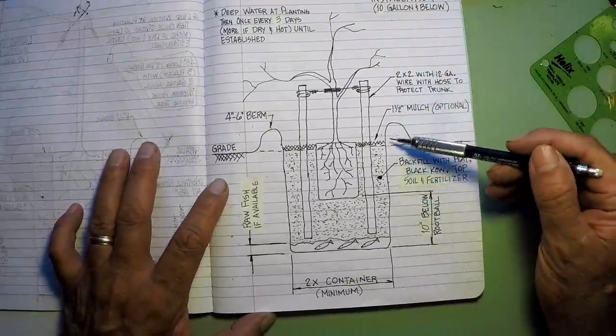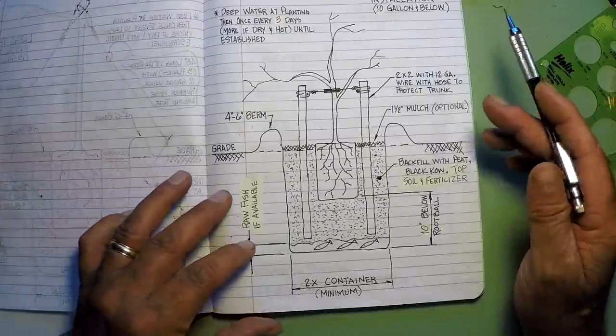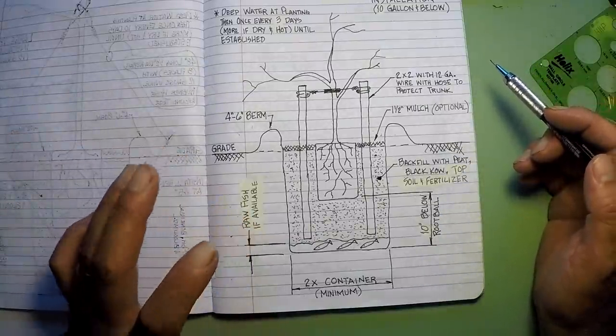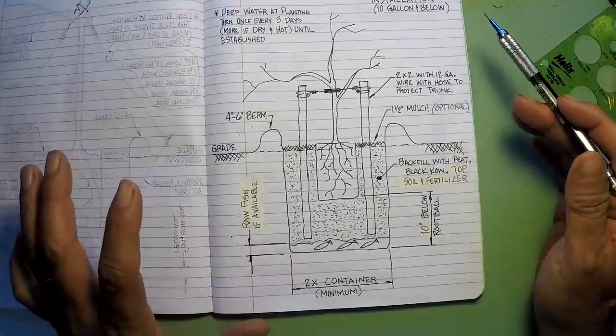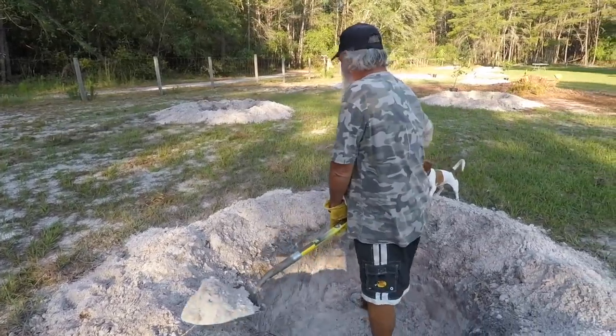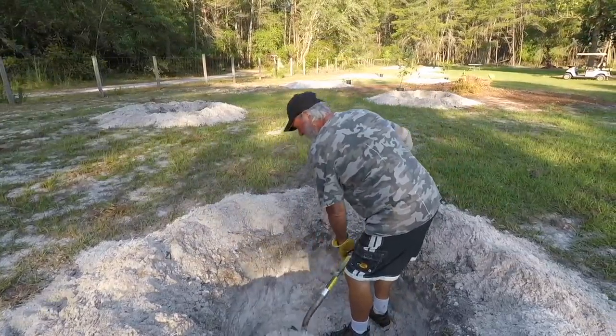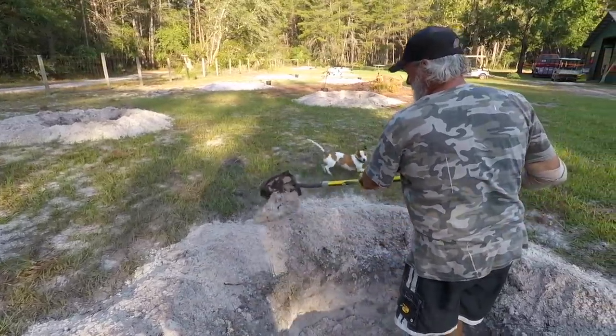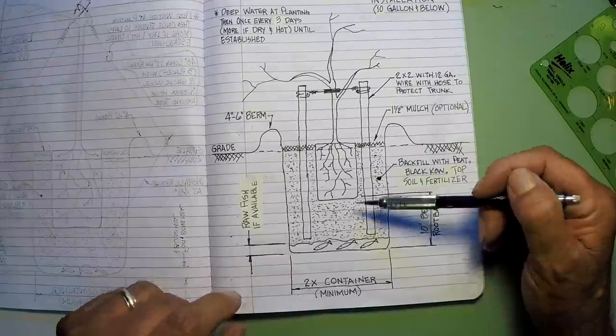First thing you got to do is dig a hole. Pick out a sunny location where you want it with well-drained soil, where you get plenty of sun, at least eight to nine hours a day. That's your good spot. Dig the hole. You want to make it two times the size of your container, at least two times. Now for me, I live in Florida and I have very sandy soil, very poor soil. It doesn't have much growing nutrition in it, so I'm not even going to use my soil that is in the hole. But you folks that have good soil can use some of that soil in your backfill.